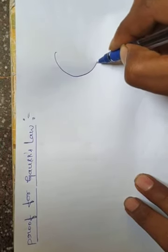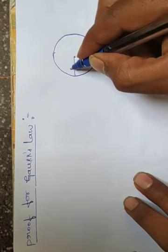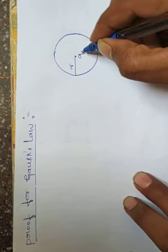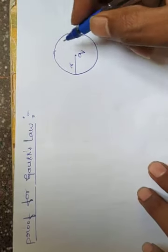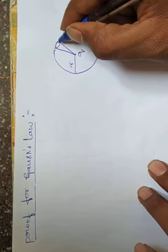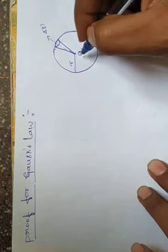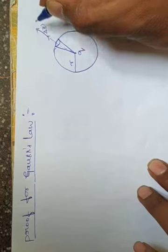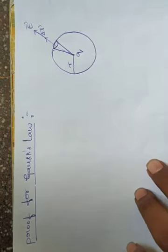For that, I am considering a sphere of radius r. This is a sphere of radius r. The charge is enclosed by the sphere. Now I consider the electric flux through this sphere. For that, I want to consider the electric flux through a small surface area element.